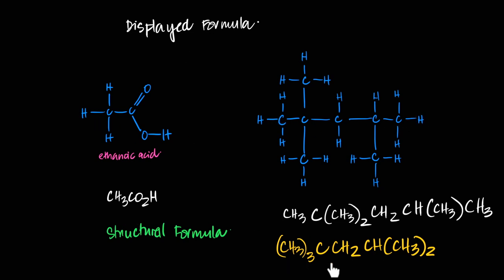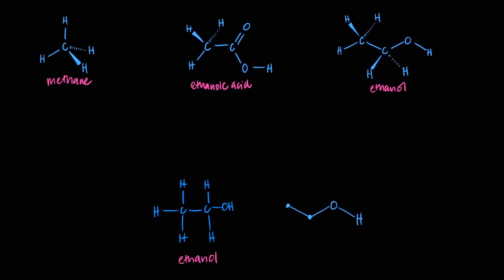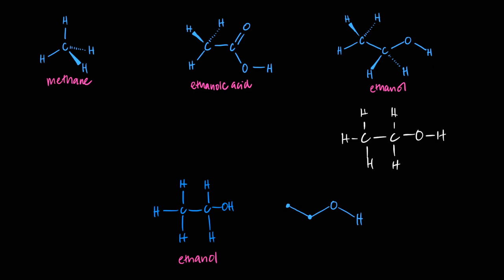A third way is the stereochemical formula, which we only draw when dealing with optical isomerism. What it shows is the shape: carbon with four bonds is tetrahedral, carbon with three bonds is trigonal planar, oxygen with two bonds and two lone pairs gives a bent shape. Ethanol would be drawn as a tetrahedral CH₃, then a tetrahedral CH₂, and a bent OH group. This helps you imagine what molecules actually look like in 3D.